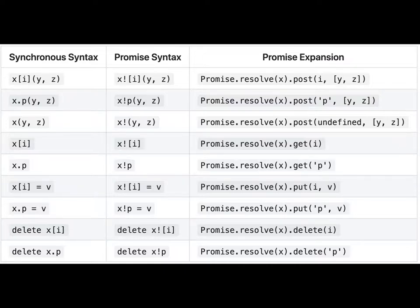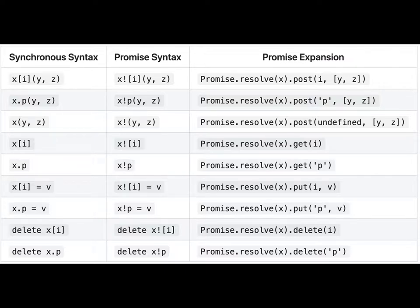There are essentially four operations that correspond to dot: invocation, getting a property, setting a property, and deleting a property. Q has an API that supports each of them, and the original 2011 proposal proposed the bang syntax for each. But our experience since then is that really only invocation and get are useful — I don't think I've ever written or seen code that makes use of a remote put or remote delete, so if those don't survive the process, I'm completely calm about that.